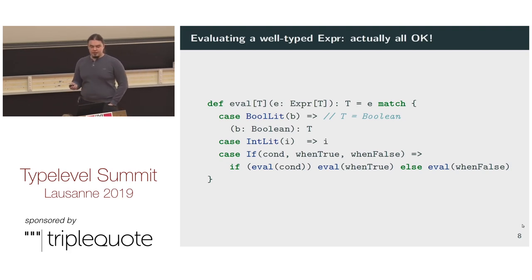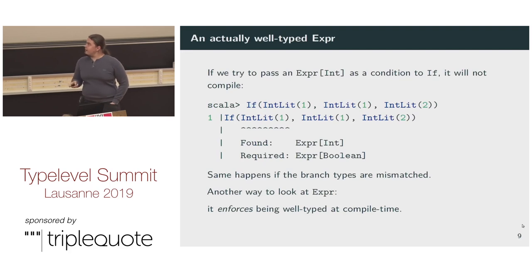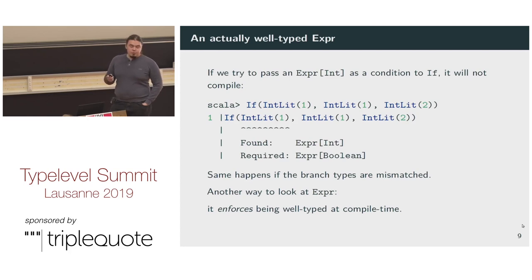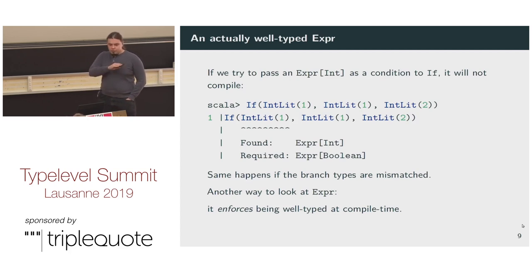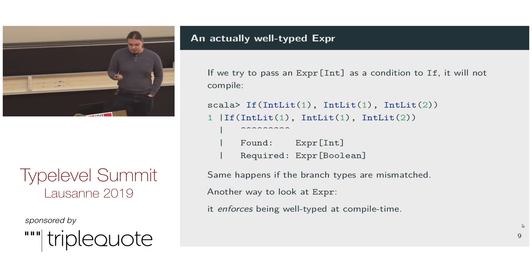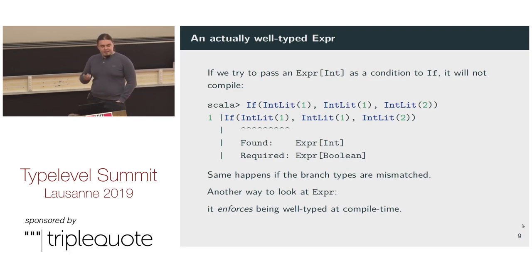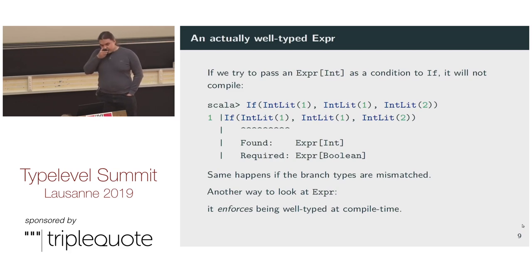There is another interesting property: Expr is a well-typed expression. If we try to pass something that would not evaluate to Boolean as a condition to If, that will not compile. If we have mismatched branches in an If, that will not compile either. Another way to look at how we have defined Expr is that we have forced it to be well-typed at compile time. This helps us because if it could be ill-typed, we would need to essentially have a ClassCastException somewhere in eval.